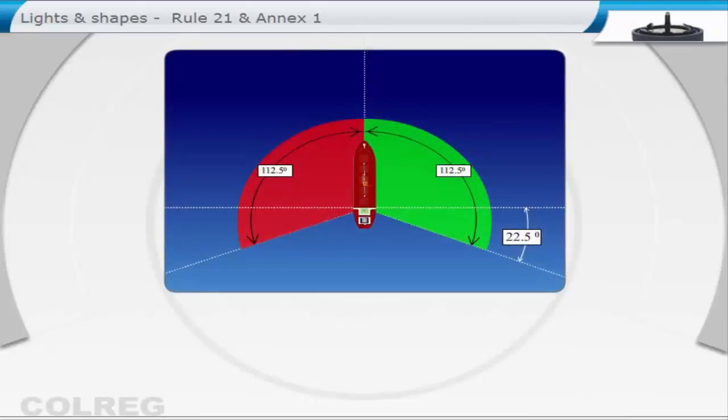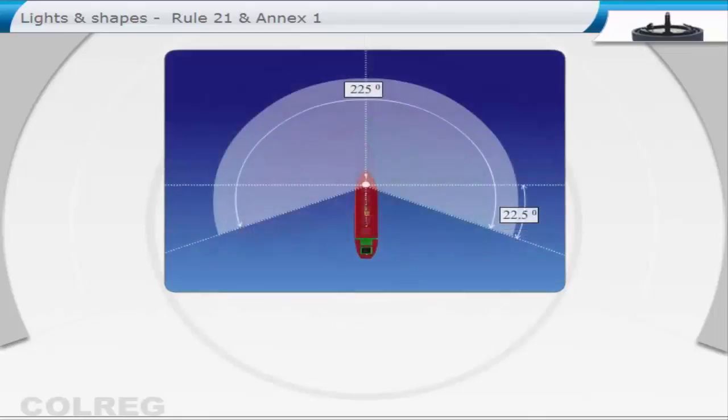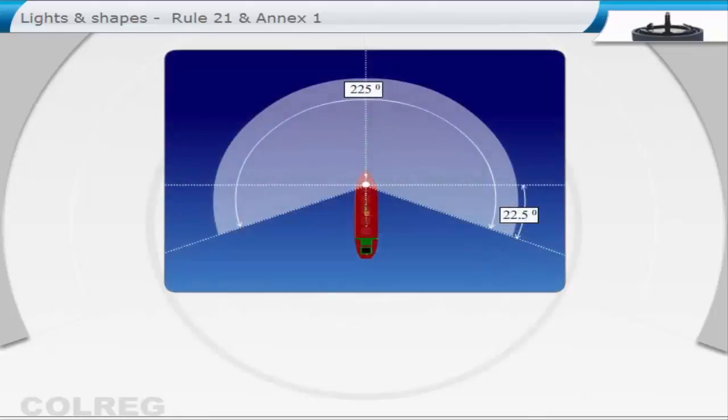The main lights defined under the rules are the following. Masthead lights are white lights on the fore and aft centre line of the ship, visible from right ahead round 112.5 degrees on both sides of the bow.